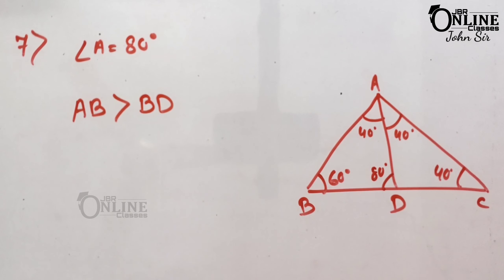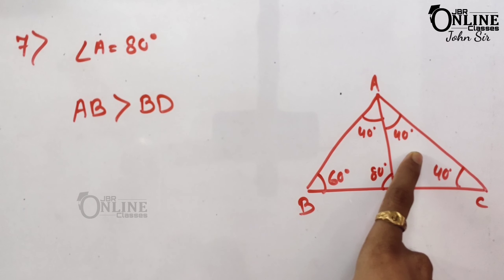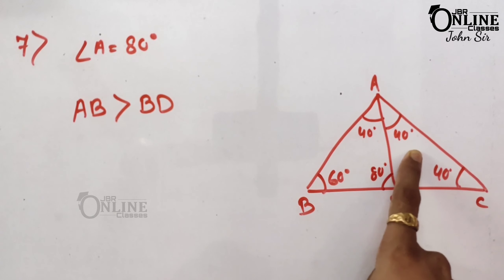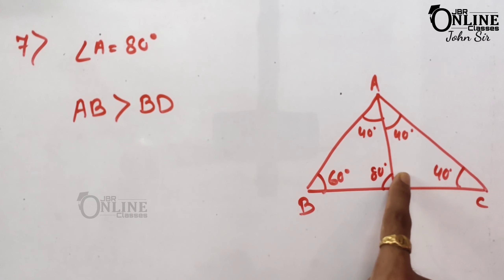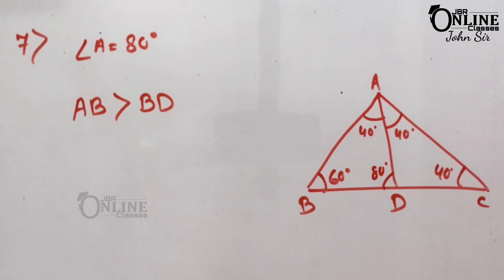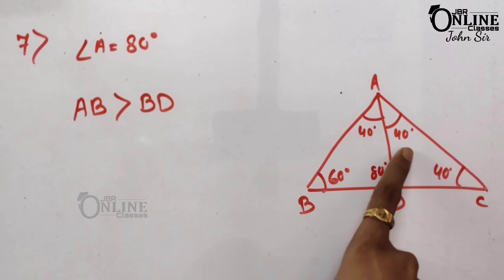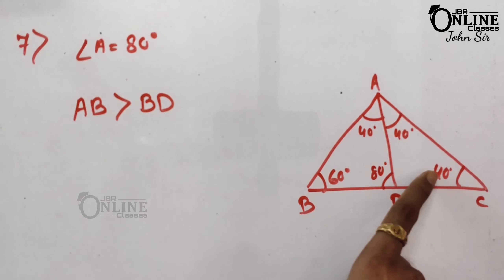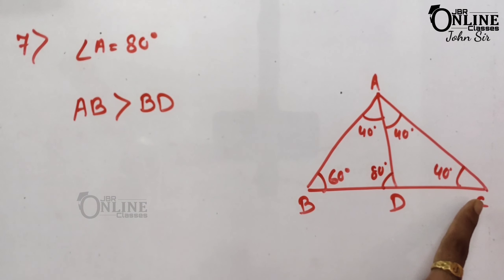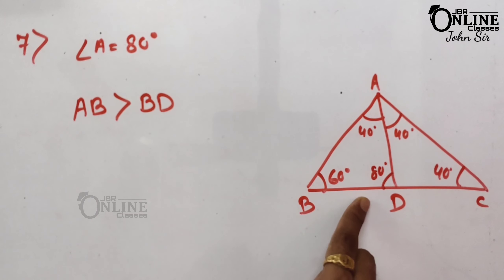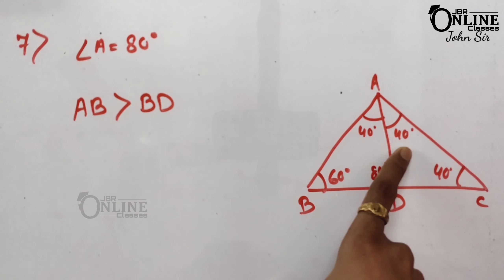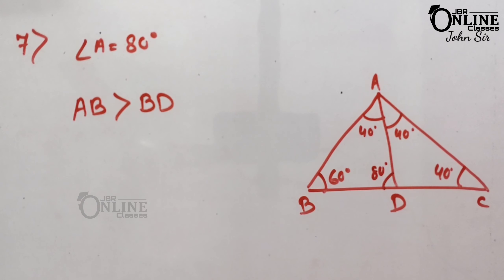Also, in triangle ABD, AD > BD. Now in the other triangle: the angles are 40° and 40°, making the third angle 100°. The side AD is opposite 40°, and DC is also opposite 40°, so AD = DC. Similarly, BD is opposite 40°.